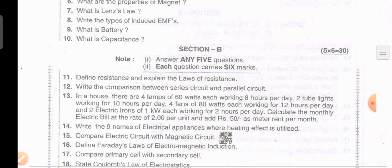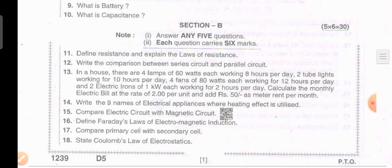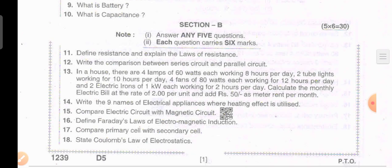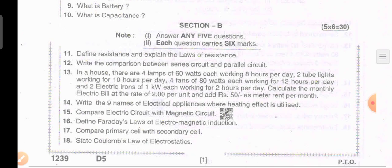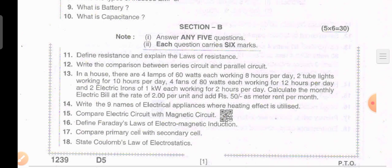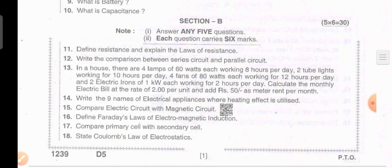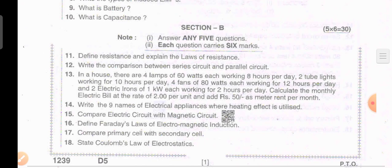Next we are moving on to Section B questions. It will carry 6 marks each, and you have to attempt any 5. Overall that is 30 marks. You may have a choice in Section B, but not in Section A.